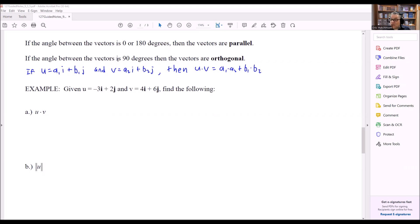But if the angle between the vectors is 90 degrees, then it's orthogonal. So 0 or 180 is parallel, but we only have one angle, 90 degrees, and that's going to be the classification for orthogonal.